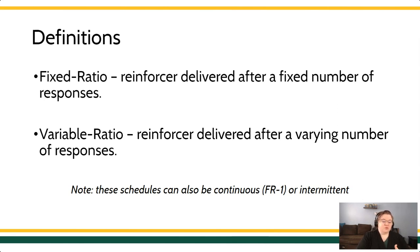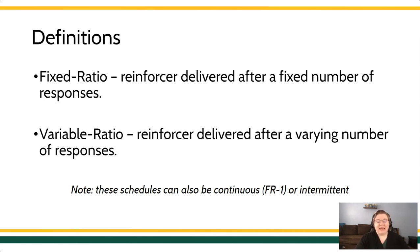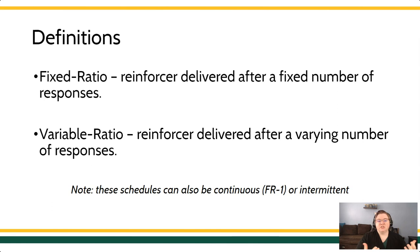Note that in a fixed ratio schedule, we could also be talking about continuous reinforcement. Fixed ratio one is the same as a continuous schedule — both refer to the idea that every response is going to contact reinforcement. Ratio schedules are introduced as VR number or FR number, telling you the number of responses required to contact the reinforcer. An FR1 means every single response earns the reinforcer.